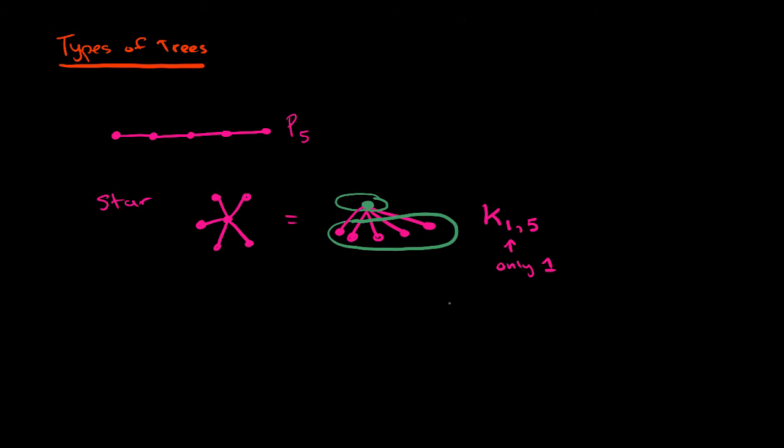And we actually can generalize this a little bit more and we can have something called a double star. And that would look sort of like what you would expect. There's two sort of things in the center and then everything else comes off of one of these guys. So something like that, something like that, and then the other guy like this. There's some stuff coming off of that one. So this is called a double star.